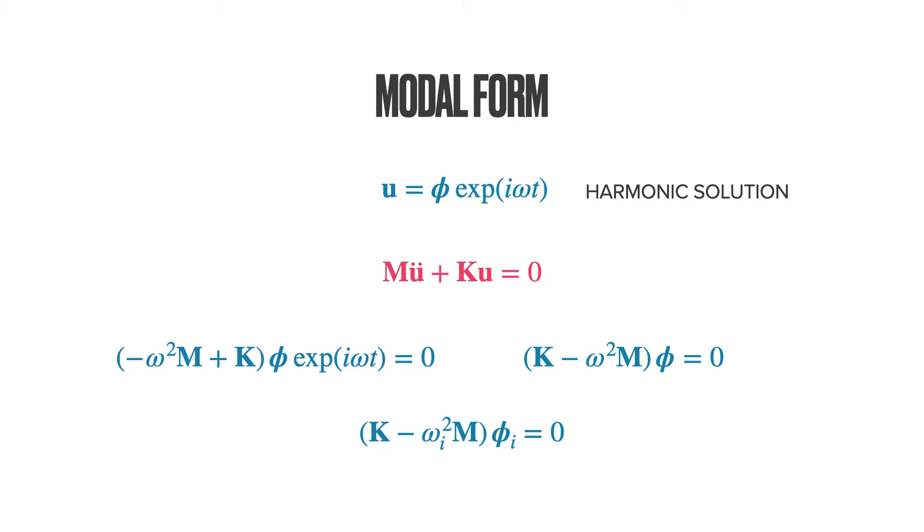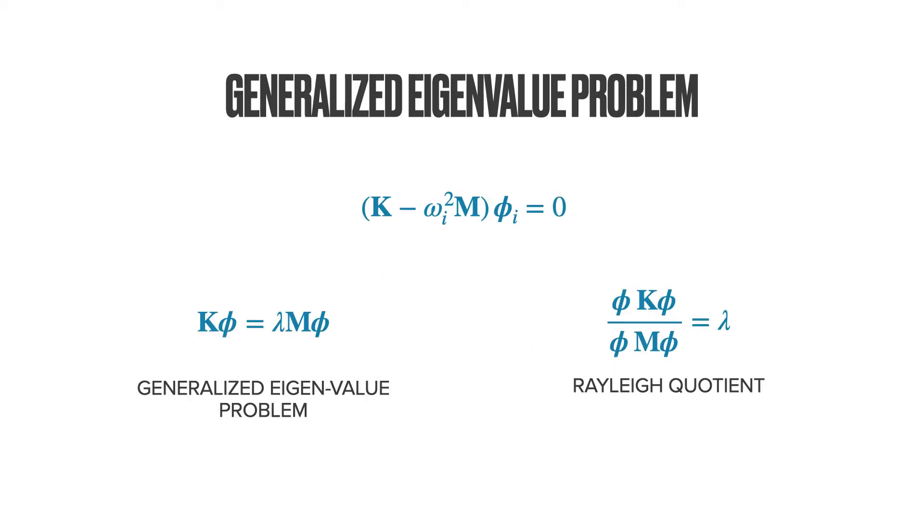The subscript i here denotes the various natural modes of the structure. If we write lambda as omega squared, we obtain the so-called generalized eigenvalue problem.